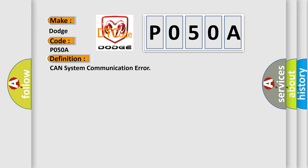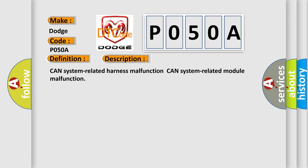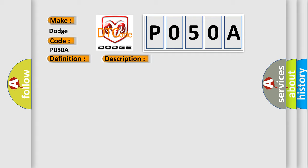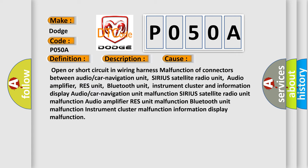Here is a short description of this DTC code. CAN system related harness malfunction, CAN system related module malfunction. This diagnostic error occurs most often in these cases: open or short circuit in wiring harness; malfunction of connectors between audio or car navigation unit, Sirius satellite radio unit, audio amplifier unit, or Bluetooth unit; and malfunction of the instrument cluster and information display.